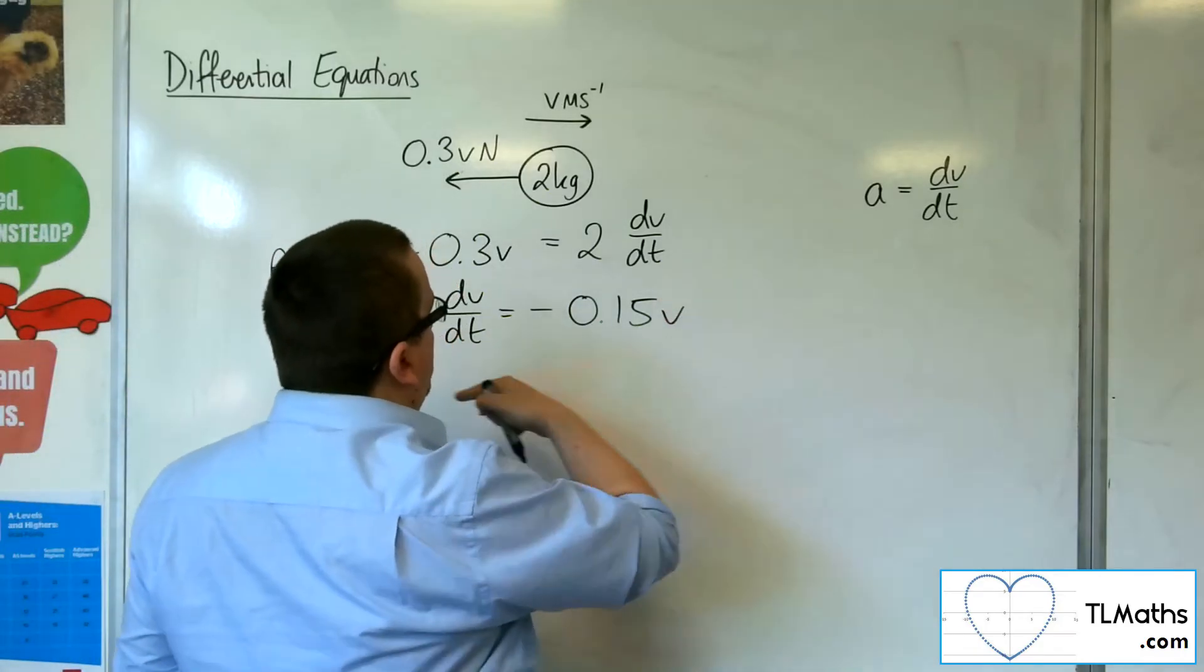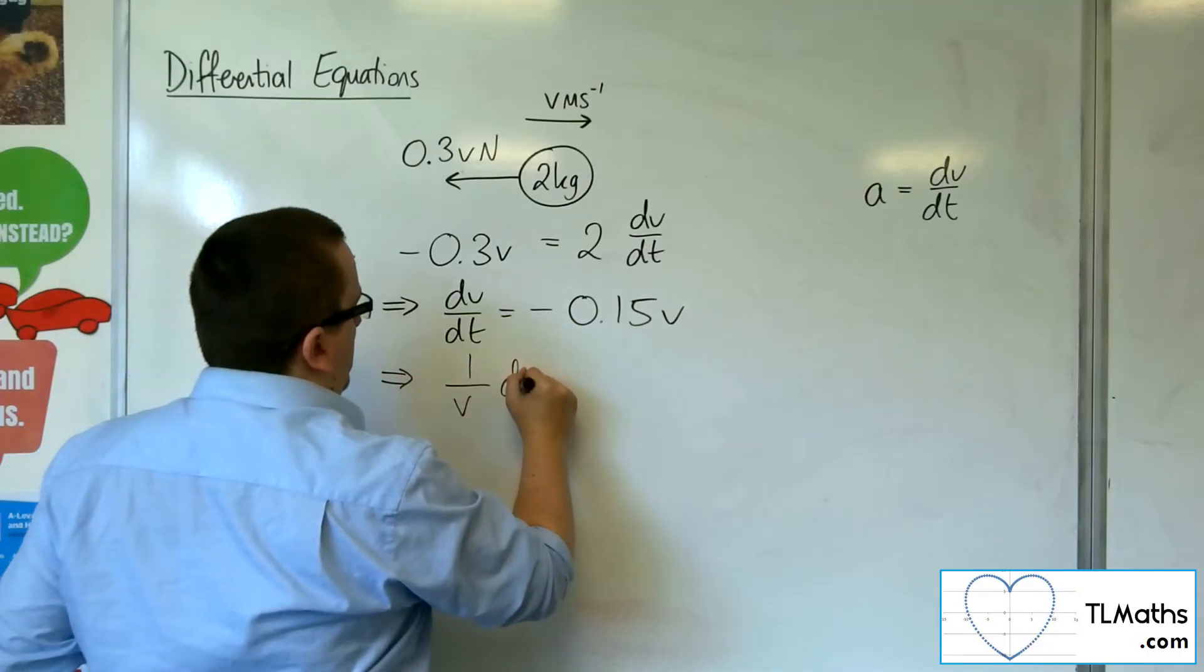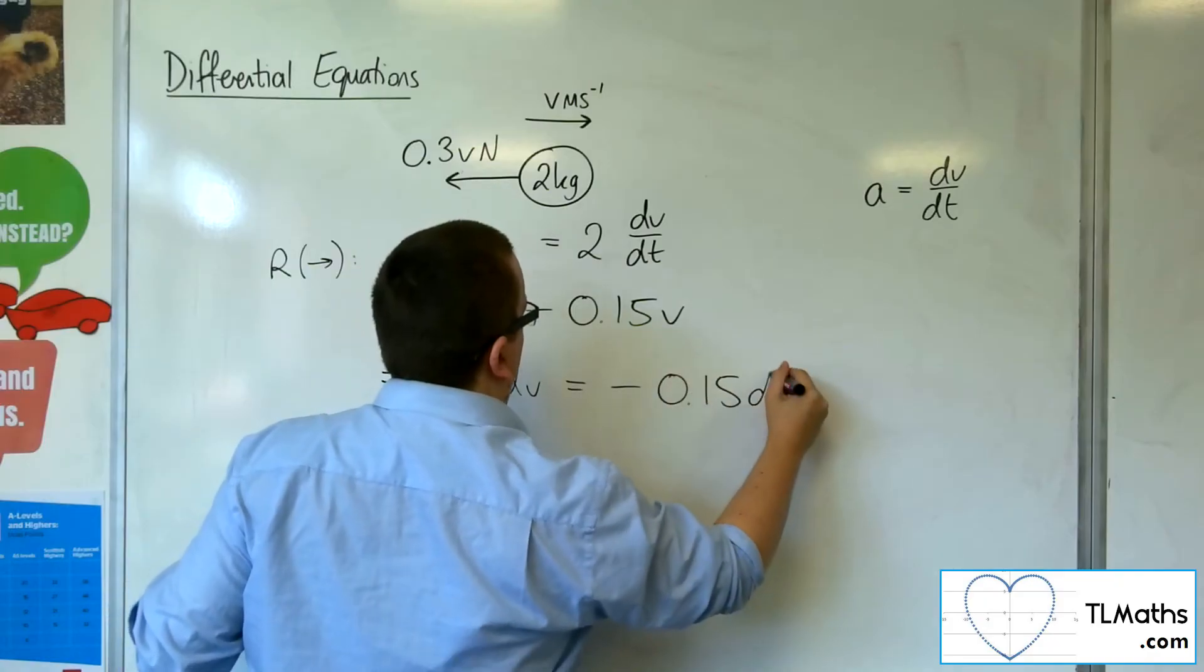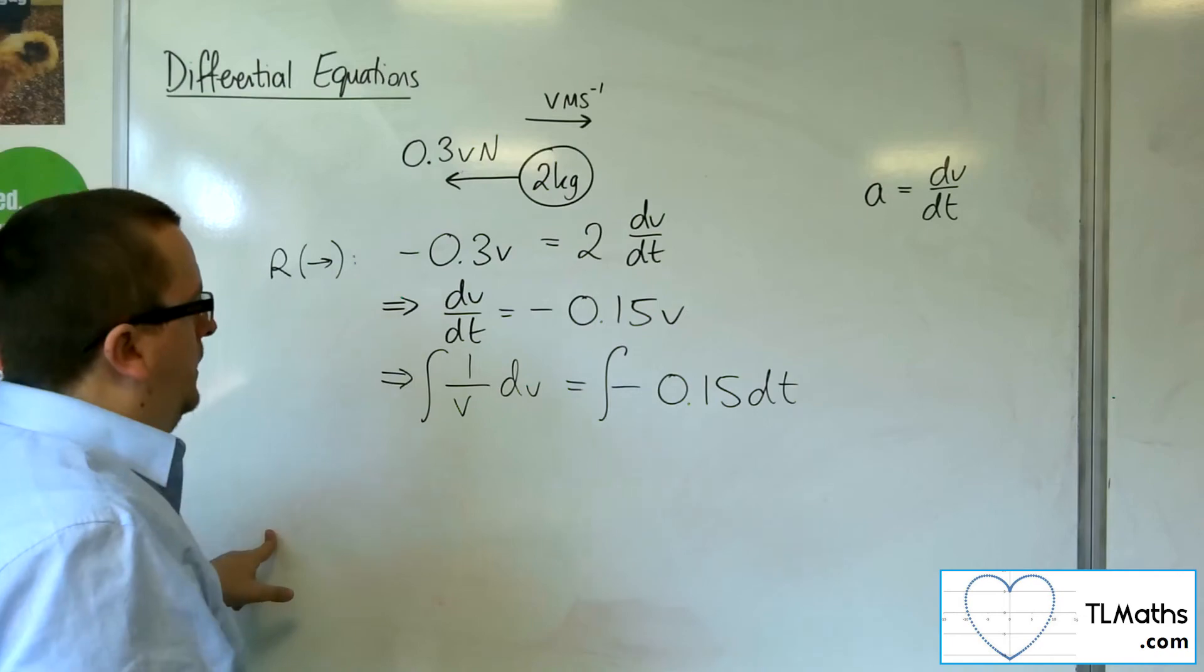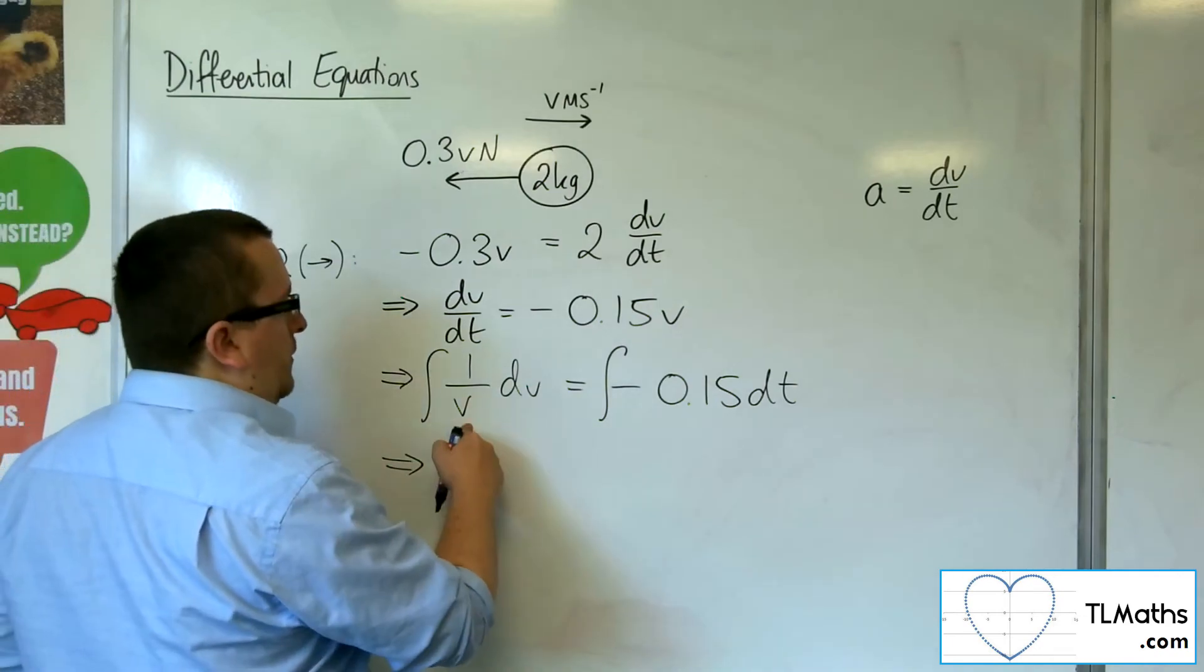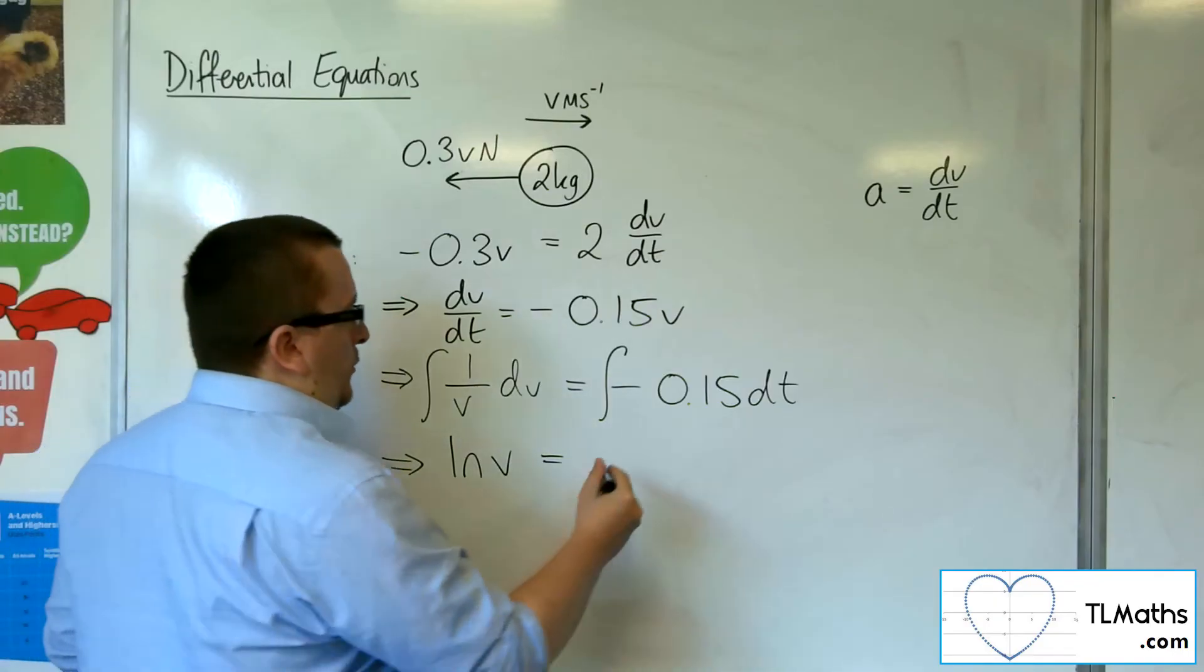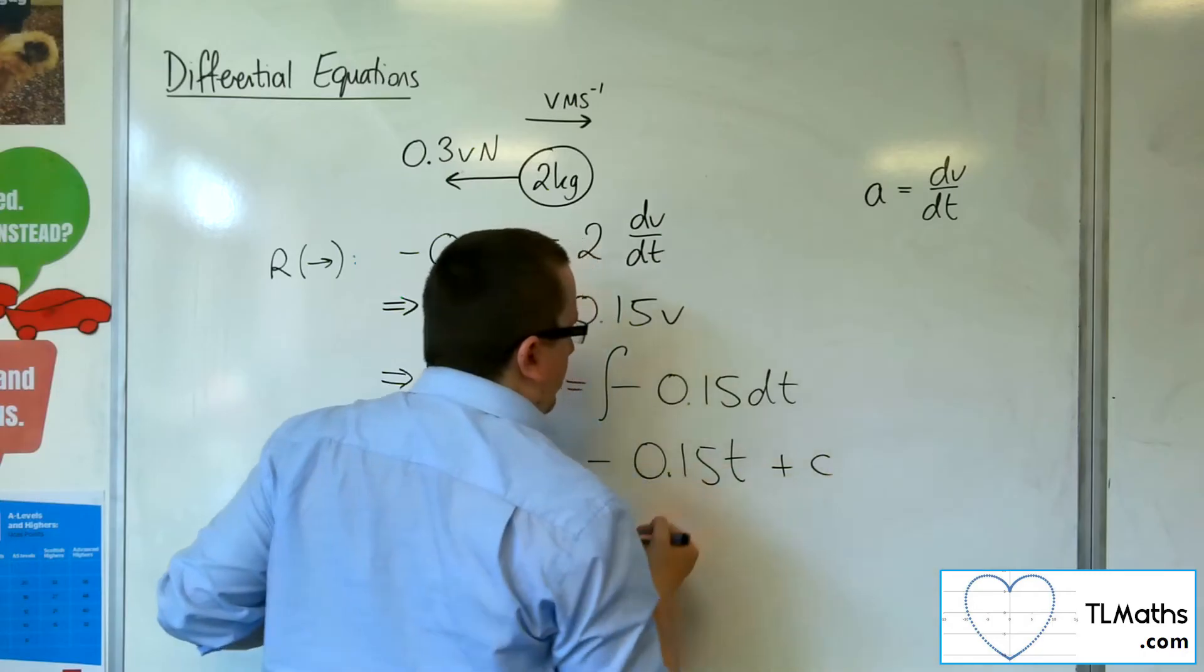So all I can do is divide both sides by v, multiply both sides by the dt, and then we can integrate both sides. So that means that we're going to have log of v is equal to minus 0.15t plus some constant c.